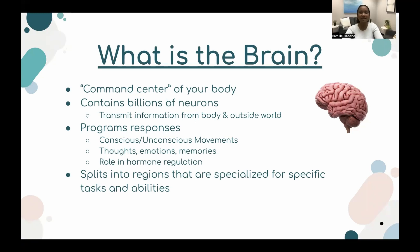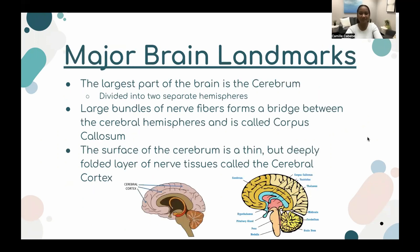The brain is split into two regions that have specialized cells for specific tasks and abilities. That was a general overview of the brain, but let's dig a little deeper with major brain landmarks.